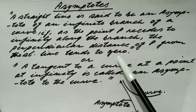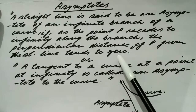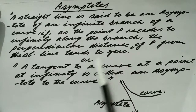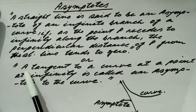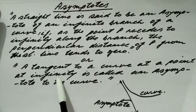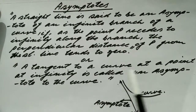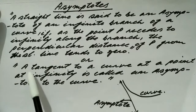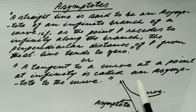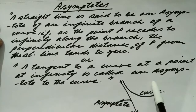This definition is a little bit complicated to understand, so let us define it in simpler words. In the simplest language, we can define an asymptote as a tangent to a curve at a point at infinity — a tangent to a curve at a point at infinity is called an asymptote to the curve.